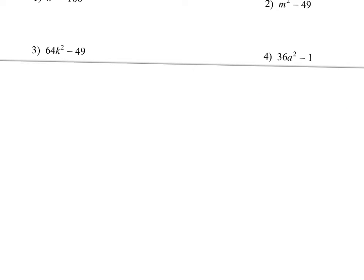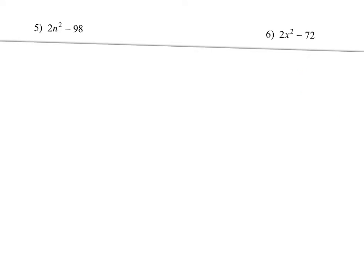Number four is the same idea. There's no GCF here. I do see it's again the difference of perfect squares. The square root of 36 is 6, and then a squared just turns into a. The square root of 1 is technically 1, so I put that in back. And I just do 1 plus and 1 minus back there.